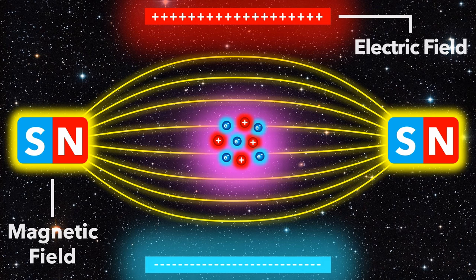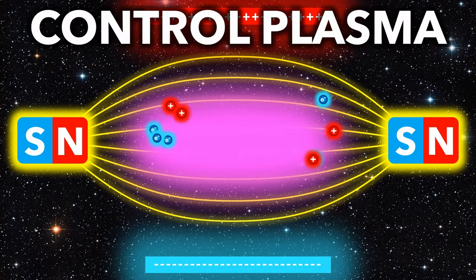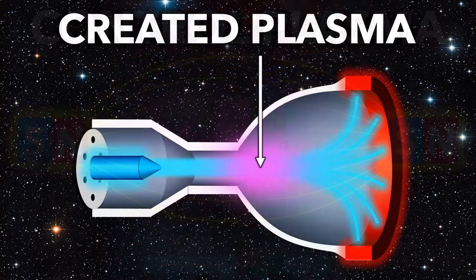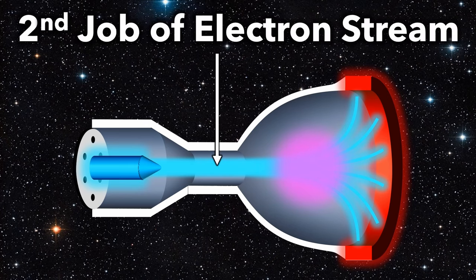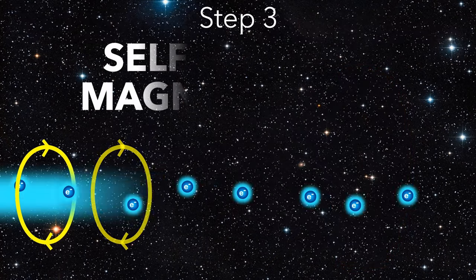We'll soon see how we can use magnetic and electric fields to do useful things with the plasma. But now that we've made our plasma, let's see the second job of the electron stream.